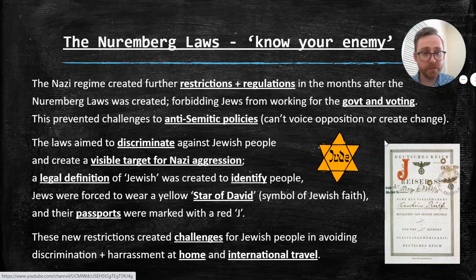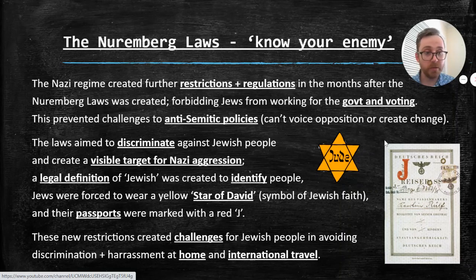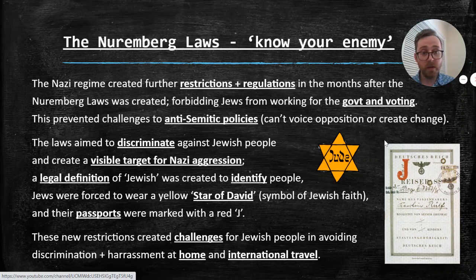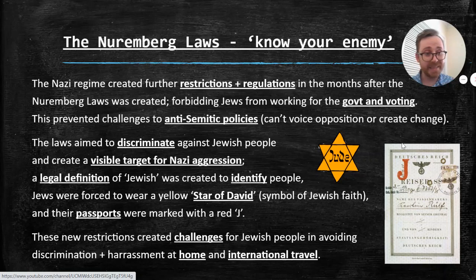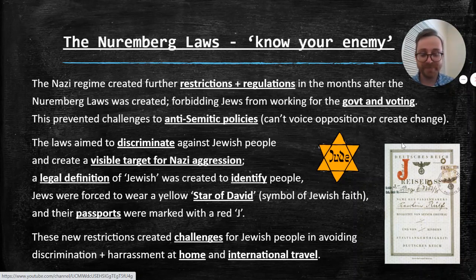These new restrictions created challenges for Jewish people in avoiding discrimination and harassment at home — creating a visible enemy for anyone in Germany to discriminate against. The red J on passports also made it very difficult to complete international travel. You couldn't leave the country, because you'd get to the border, present your passport, and it would go poorly for you.